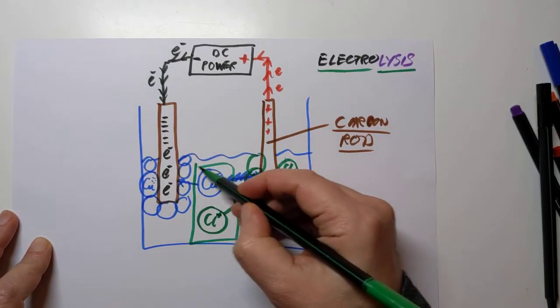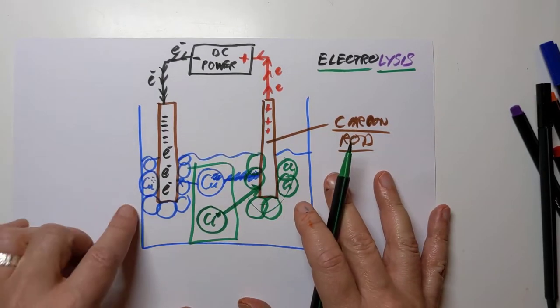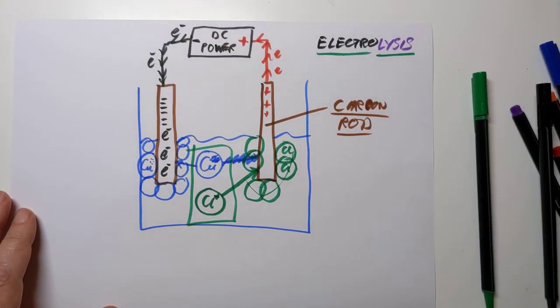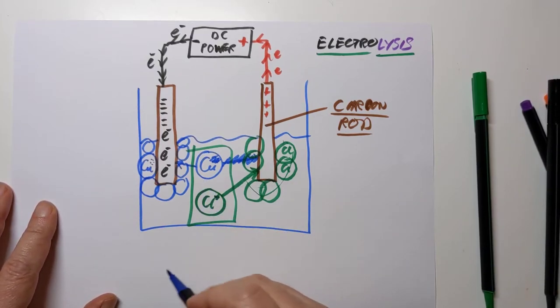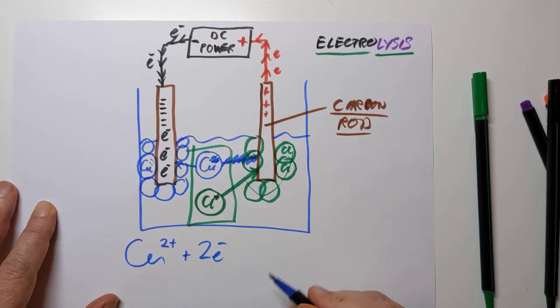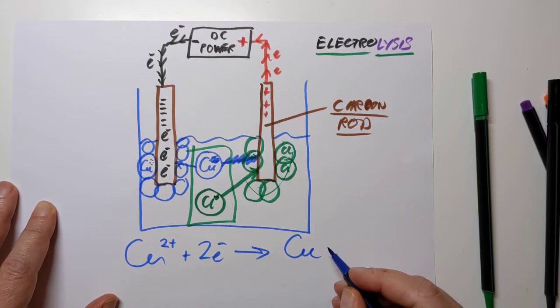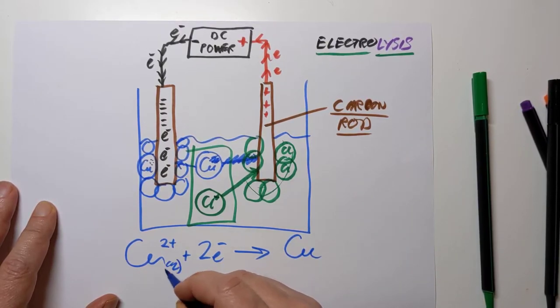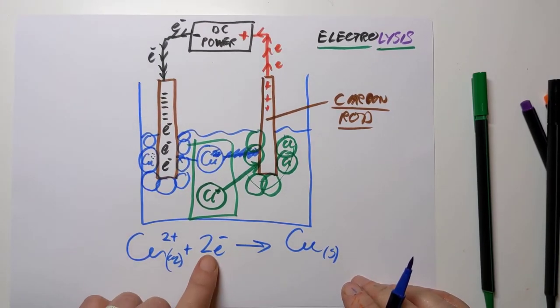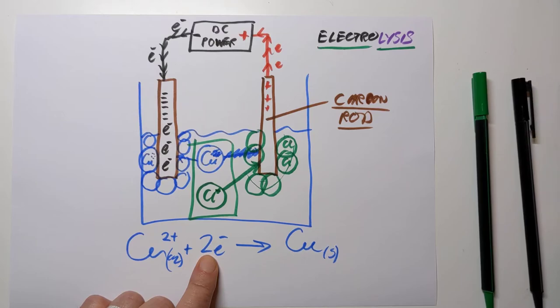If we have a look at the ion-electron equations for these two reactions, what goes on with the copper? Well, it starts as 2+. It gains a couple of electrons and it forms copper metal. These were dissolved and these will be solid. If you were paying attention from my last video, you'll remember that electrons on the left of the arrow represent a gain of electrons. So this is a reduction reaction.